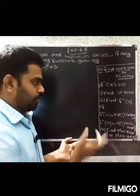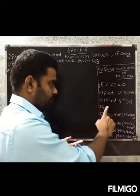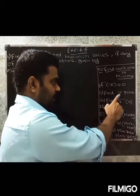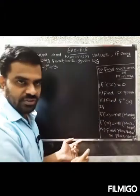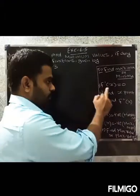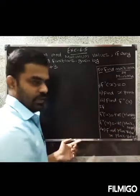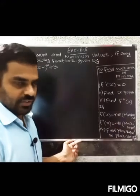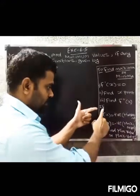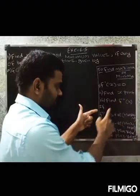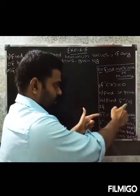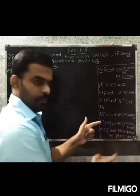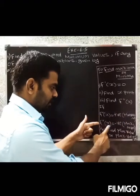Second step: differentiate f(x) again to get f''(x). If f''(x) is positive, then it is a minimum. If f''(x) is negative, then it is a maximum.